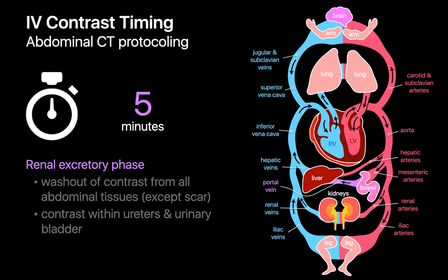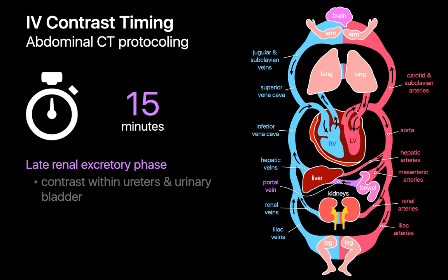At 5 minutes after injection, the kidneys have begun concentrating and excreting contrast into the renal collecting systems and ureters, and this dense contrast has also begun to accumulate within the urinary bladder — this is the renal excretory phase of enhancement. By the 5 minute mark, contrast will have pretty much washed out of all the abdominal organs and soft tissues entirely, except for maybe scar tissue, which tends to hold on to contrast a little longer. At 15 minutes after injection, we've reached the late renal excretory phase, where in patients with normal renal function, a lot more contrast has been concentrated and excreted into the renal collecting systems, ureters, and urinary bladder, and the rest of the abdomen has returned to its non-contrast appearance.